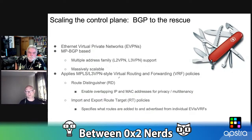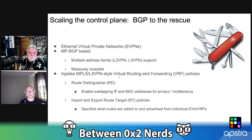EVPN provides very flexible import and export route target policies. Any new route — IP, MAC, or MAC-IP — gets a route target attached on export. Every other device can decide whether to import that route. You might have a very large BGP table but import only a few routes based on your route target policies. This gives us hub-and-spoke topologies, limited topologies, VRF leaking, and any kind of virtual construct on top of physical topologies.